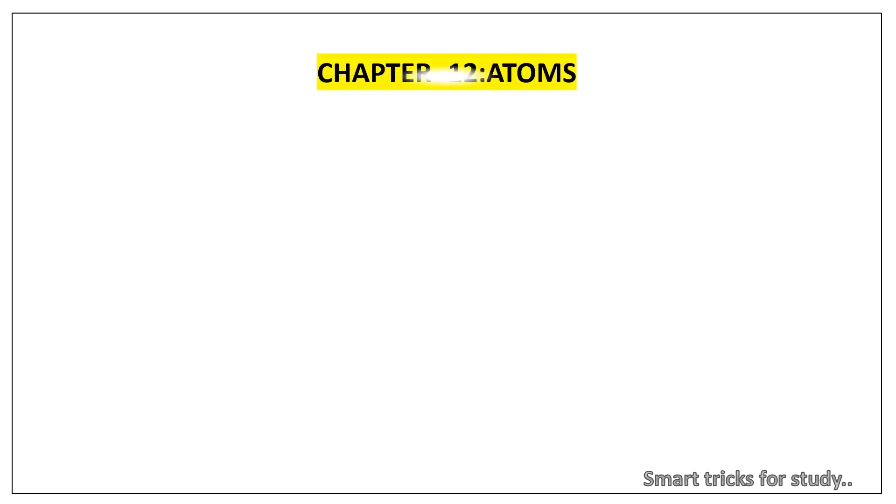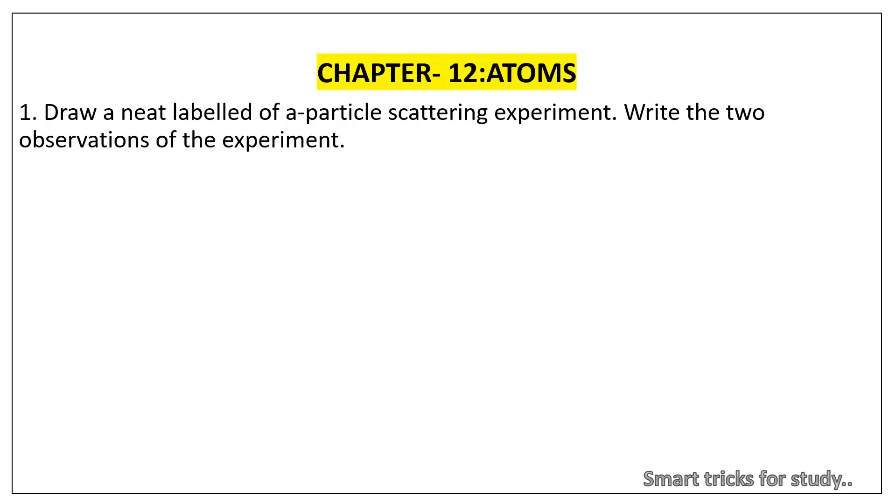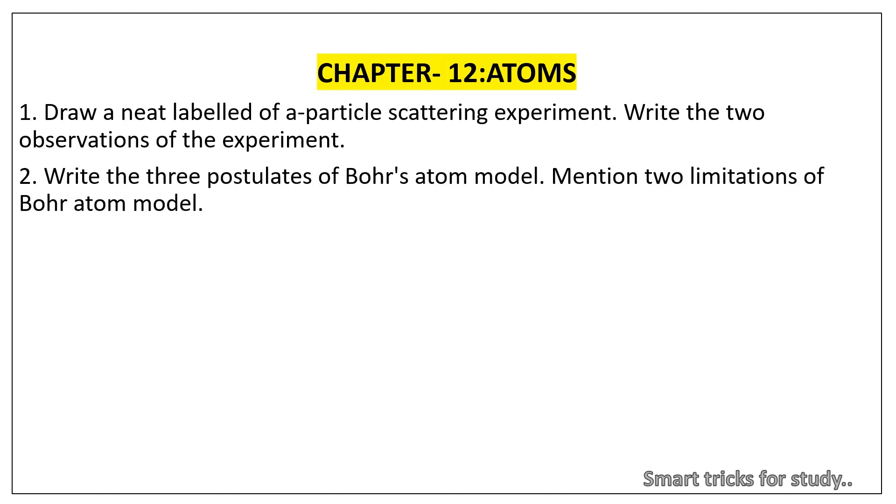Chapter 12, Atoms. 1. Draw a neat labeled diagram of alpha particle scattering experiment. Write the two observations of the experiment. 2. Write the three postulates of Bohr's atom model. 3. Mention two limitations of Bohr atom model.